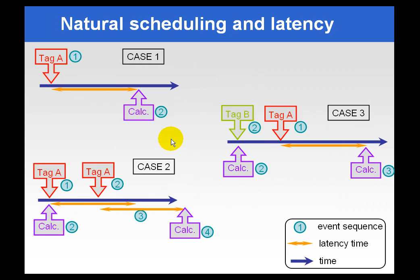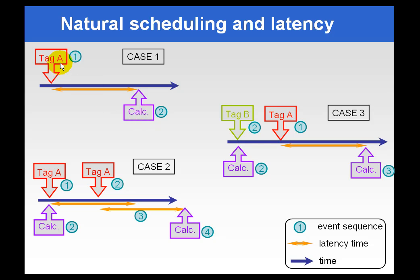We have a couple of illustrations here examining some of the common cases. Let's say we have tag A and tag B, and both can trigger the ACE calculation where we're naturally scheduled. When a value for tag A comes into the snapshot subsystem, we will wait the Latency Period — as illustrated by the double-headed arrow — until the end of the Latency Period to actually perform the calculation. The calculation will be timestamped with the triggering event, but it will be performed after the Latency Period.